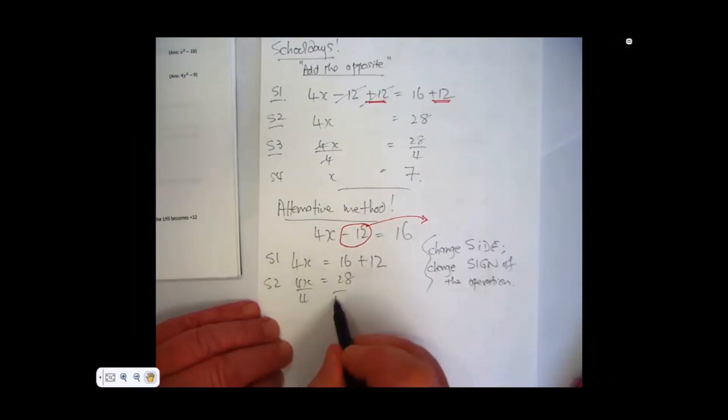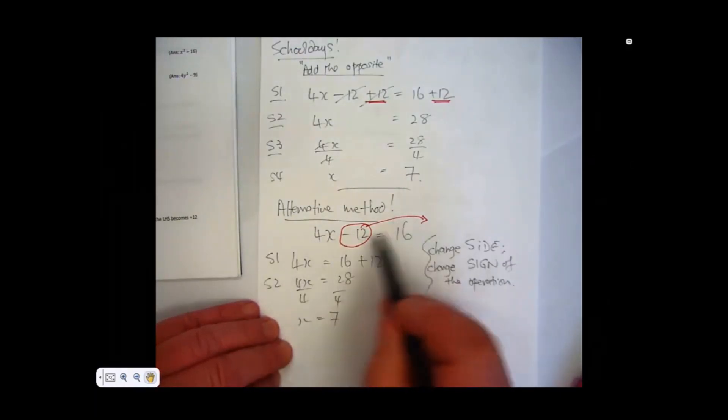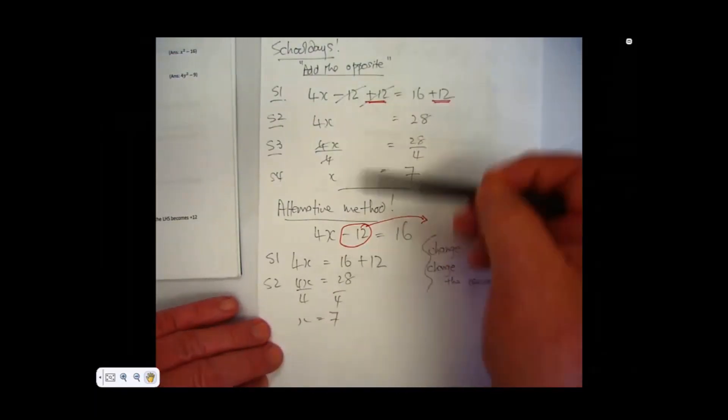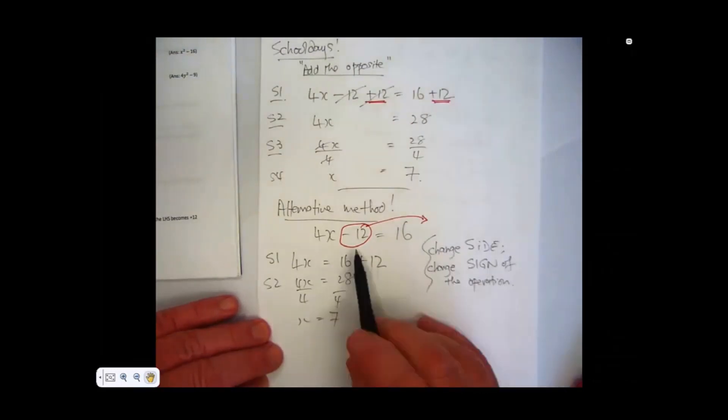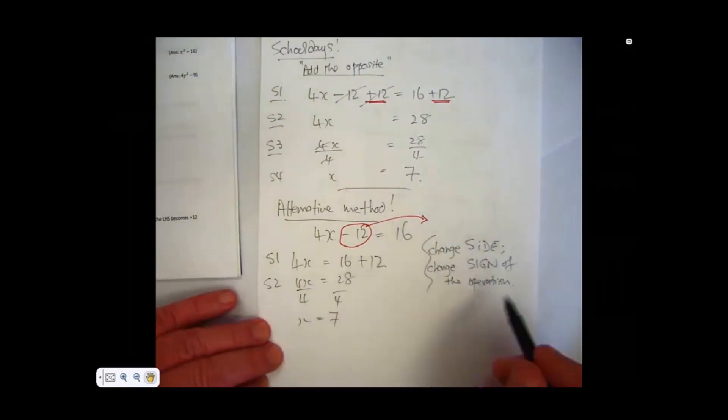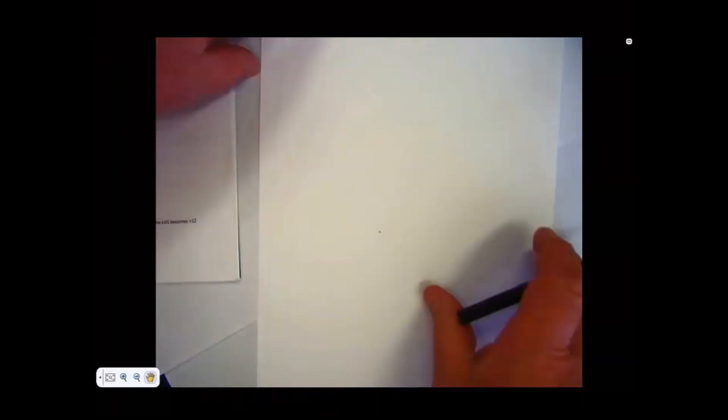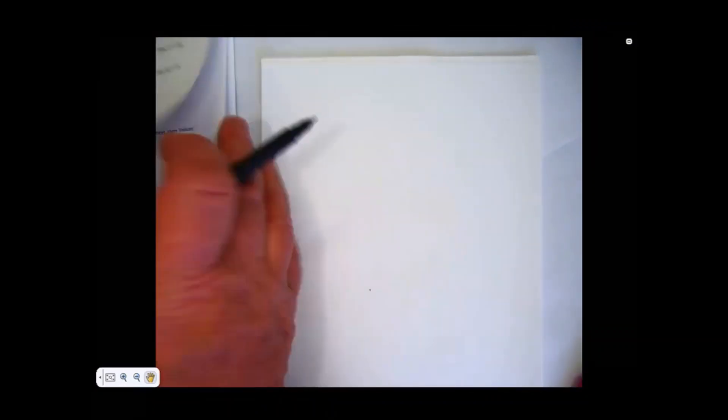I now have 4x equals 28. If I divide by 4, then x will equal 7. This can be done in your head after you get a lot of practice. You don't need to go back to this method here. It's the same thing, but this is much quicker. Change side, change sign of the operation. So there we have it. Now, that's at the bottom of page 4. I'm now turning over. Let's have a look at the examples on page 5, and we can work these through.